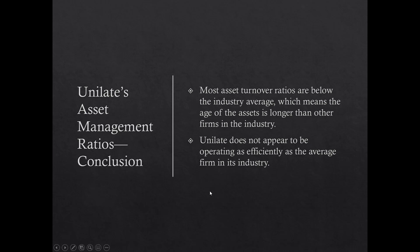Summarizing asset management ratios: most asset turnover ratios are below industry average, meaning assets are tied up longer than at other firms. Unilate doesn't appear to be operating as efficiently as the average firm, especially in converting inventory to sales and collecting sales (accounts receivable) into cash.